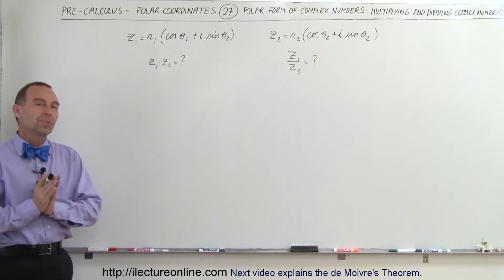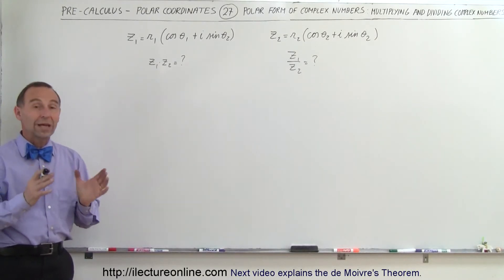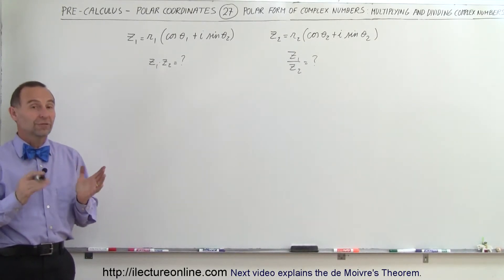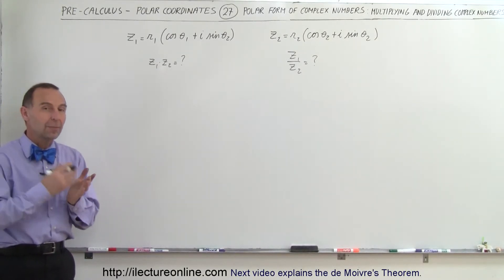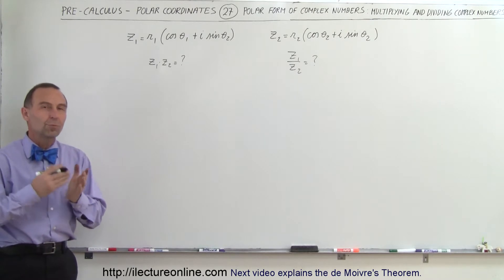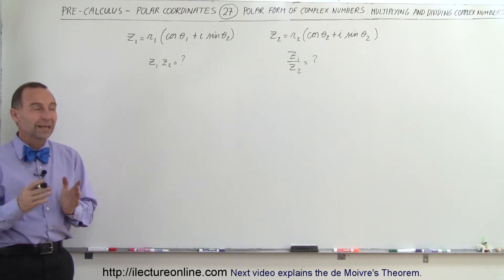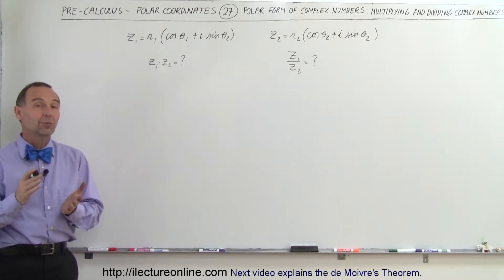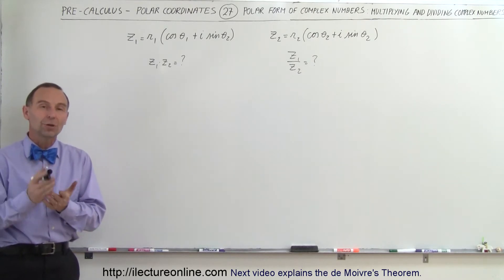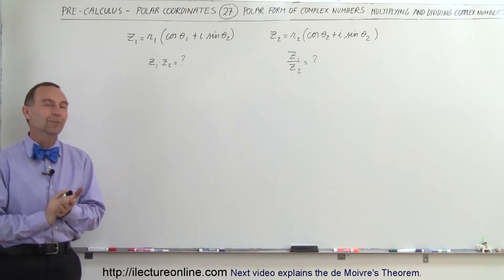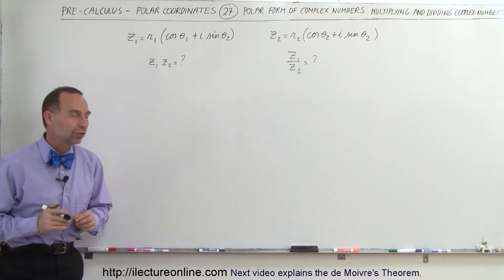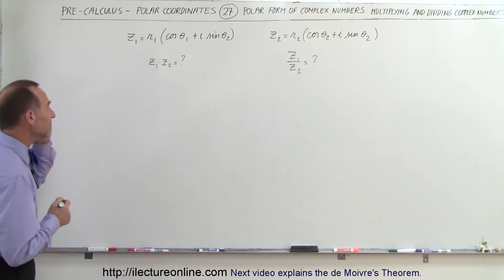Welcome to ElectronLine. One of the great advantages in converting complex numbers to polar form is that it becomes really easy to multiply and divide them. So I'll show you what I mean.